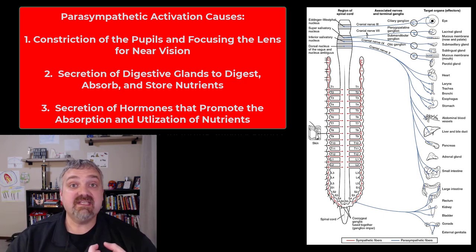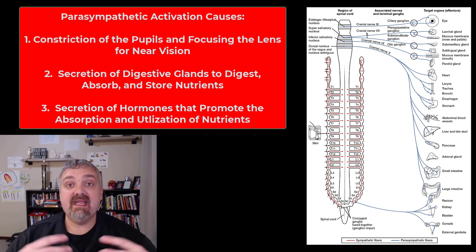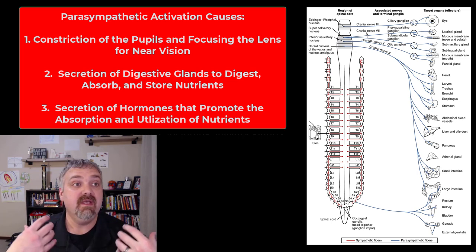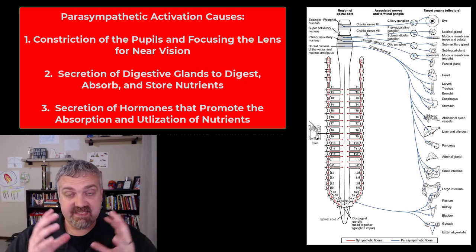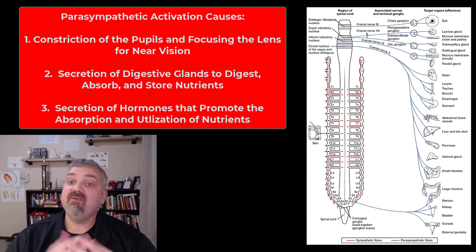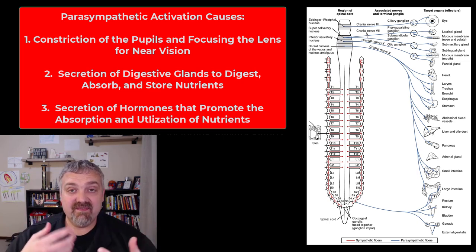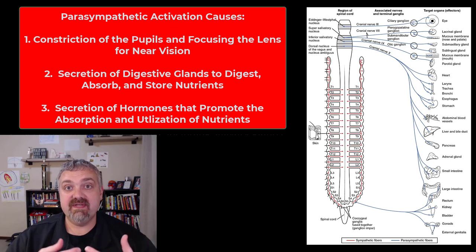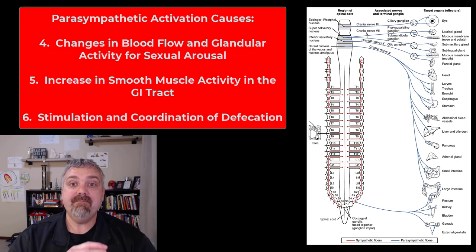Number two is increased secretion by your digestive glands — the salivary glands in the mouth, the gastric glands, glands in your small intestine, your pancreas, liver — everything. You're going to be digesting the food coming through your body. Number three would be the secretion of hormones needed to absorb nutrients, like insulin, so you're absorbing nutrients into your blood and then into your cells — all about storing and absorbing nutrients.